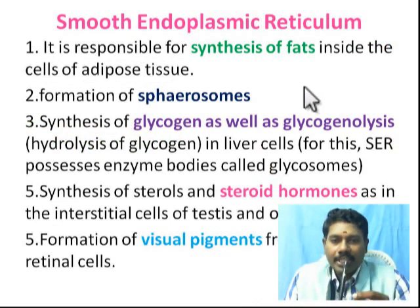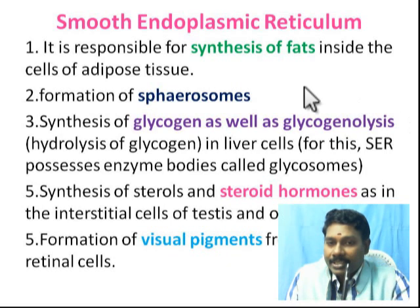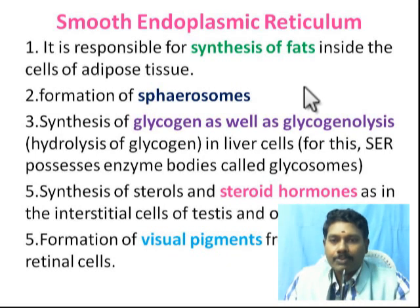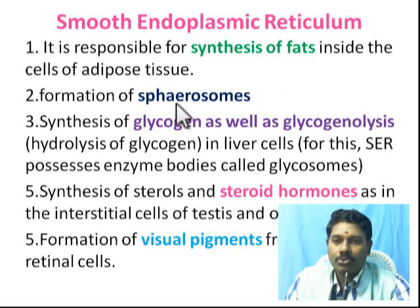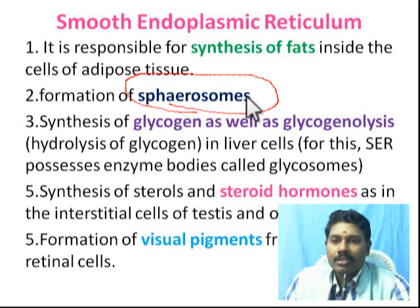Now we will see about smooth endoplasmic reticulum. Smooth ER is involved in lipid and fat molecule synthesis. It plays an important role especially in the formation of fat bodies, which are micro bodies. Lipid bodies are formed in smooth endoplasmic reticulum, and synthesis of lipids occurs there, especially in adipose tissue.